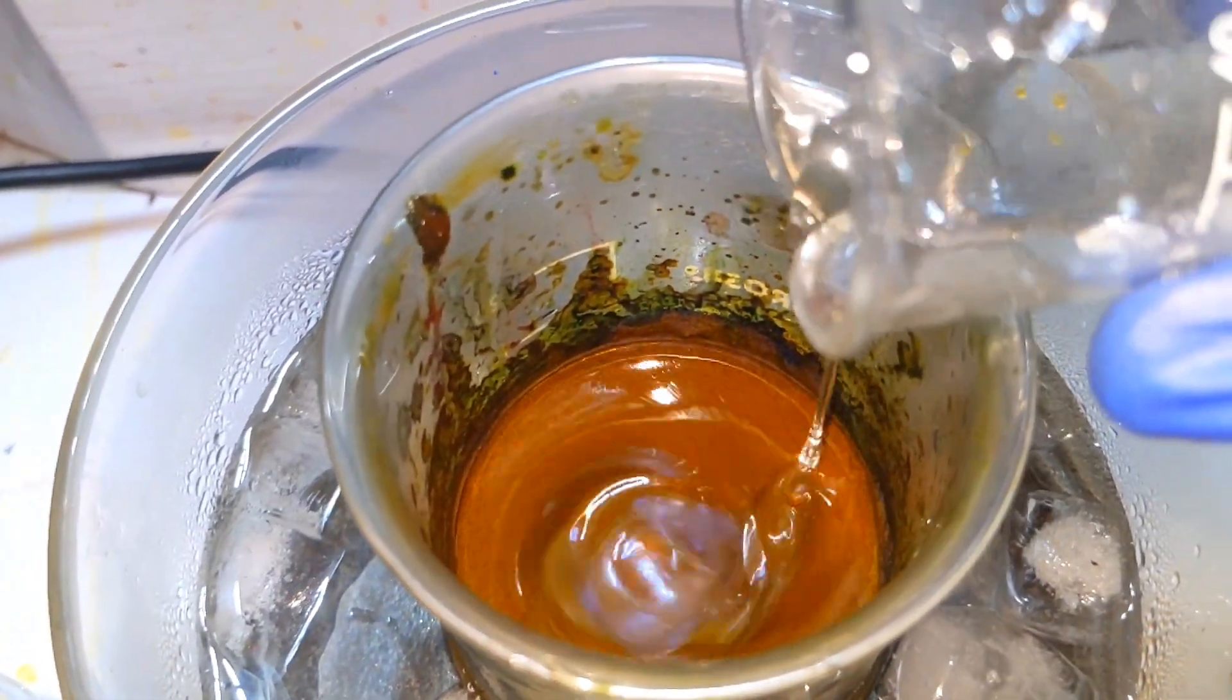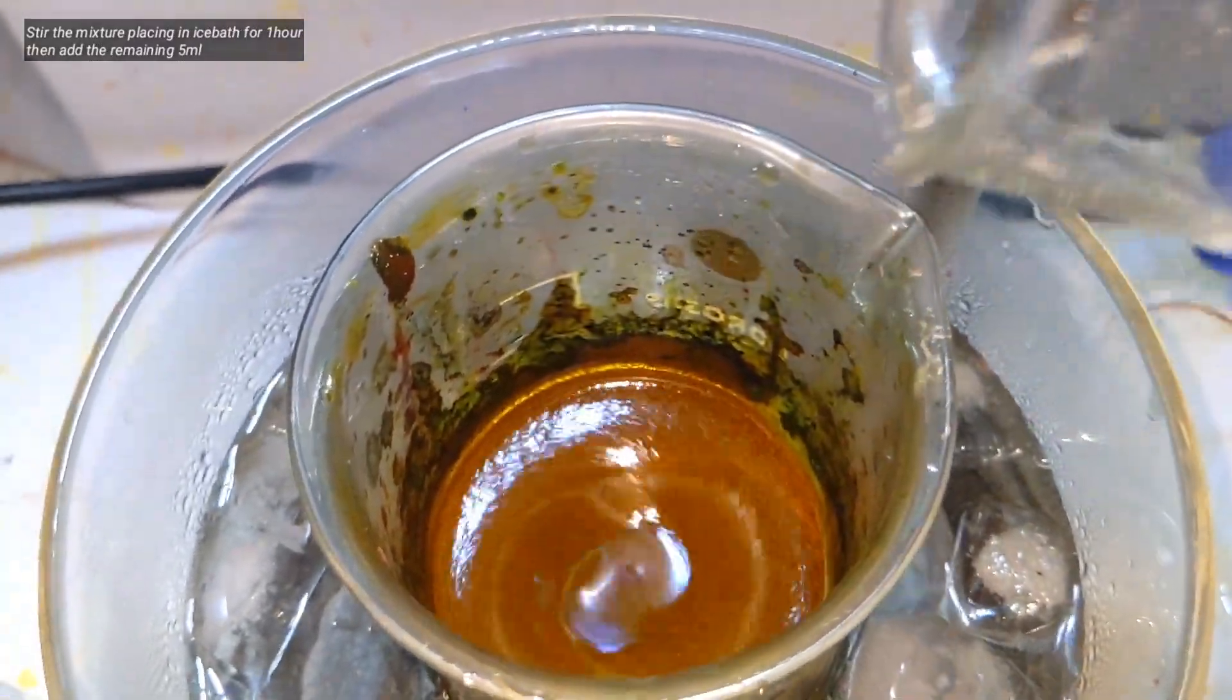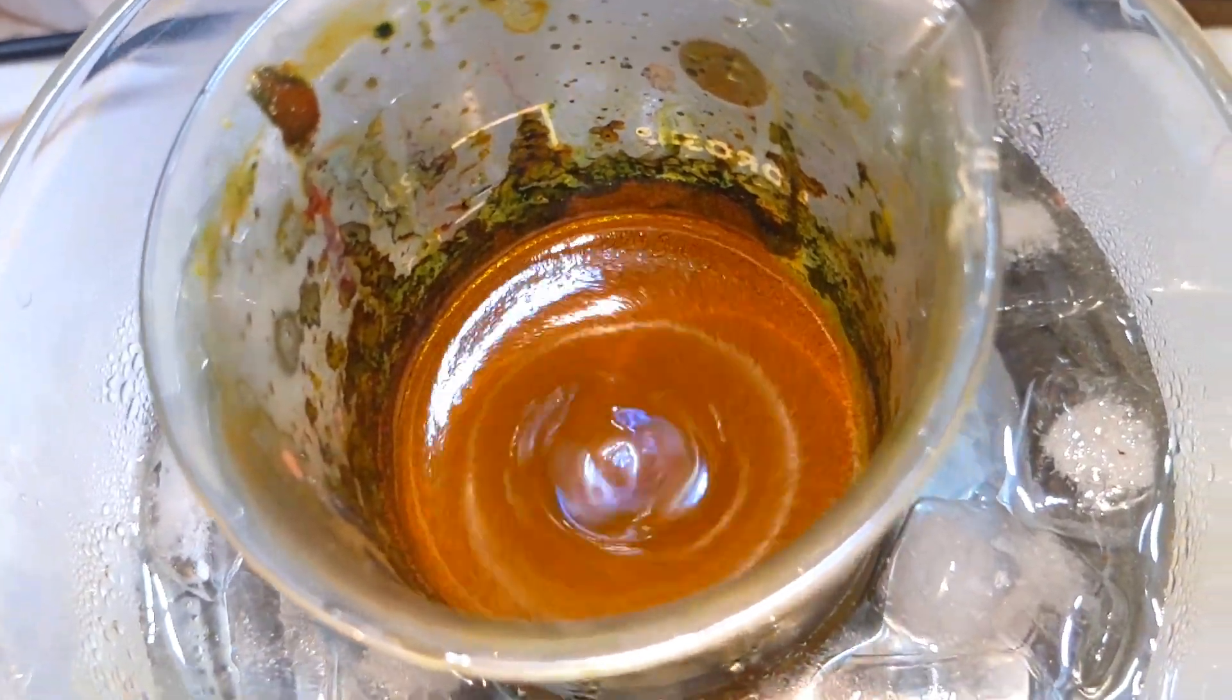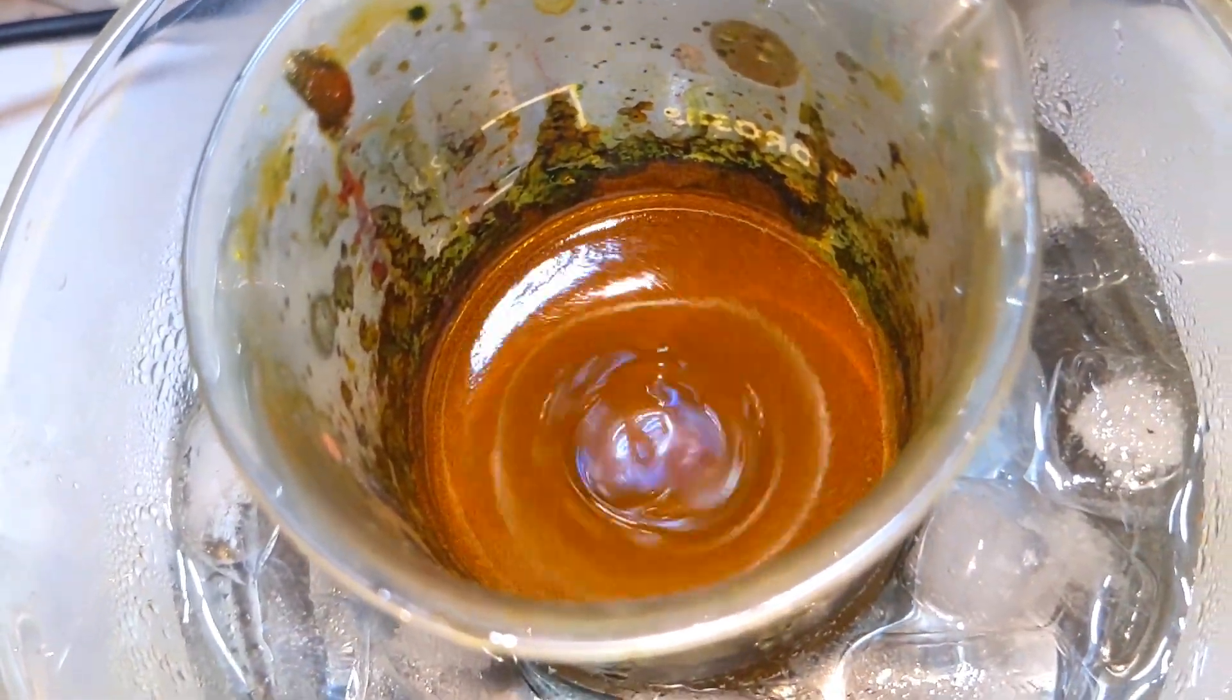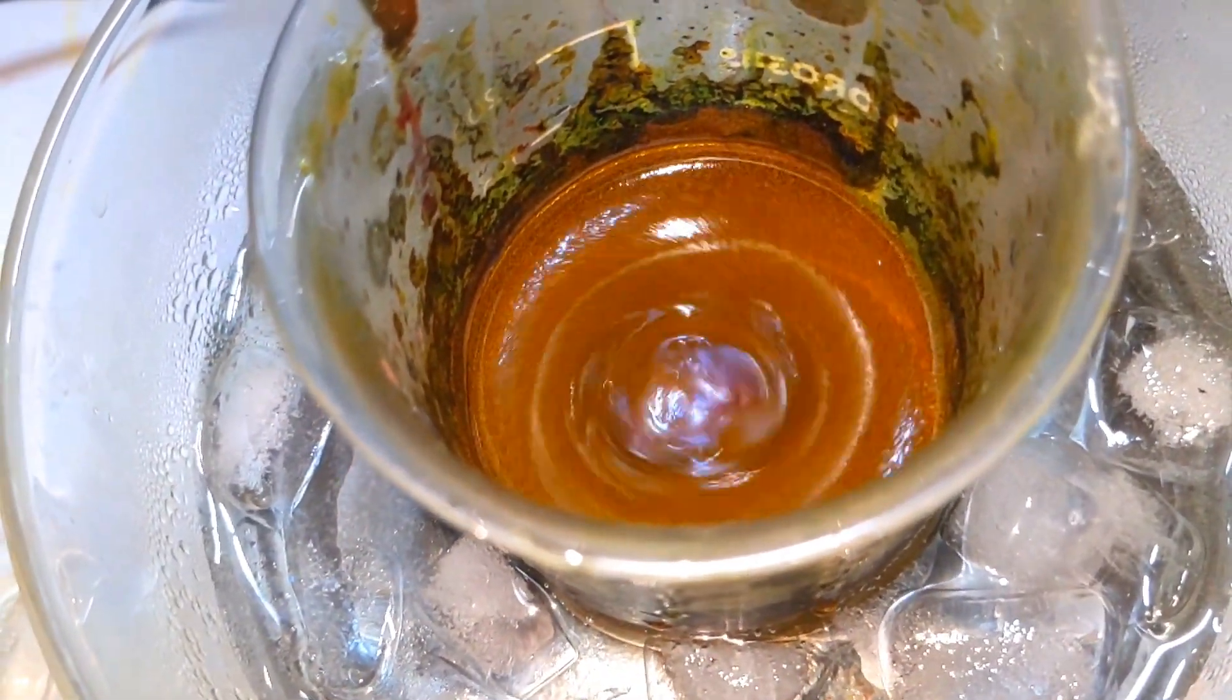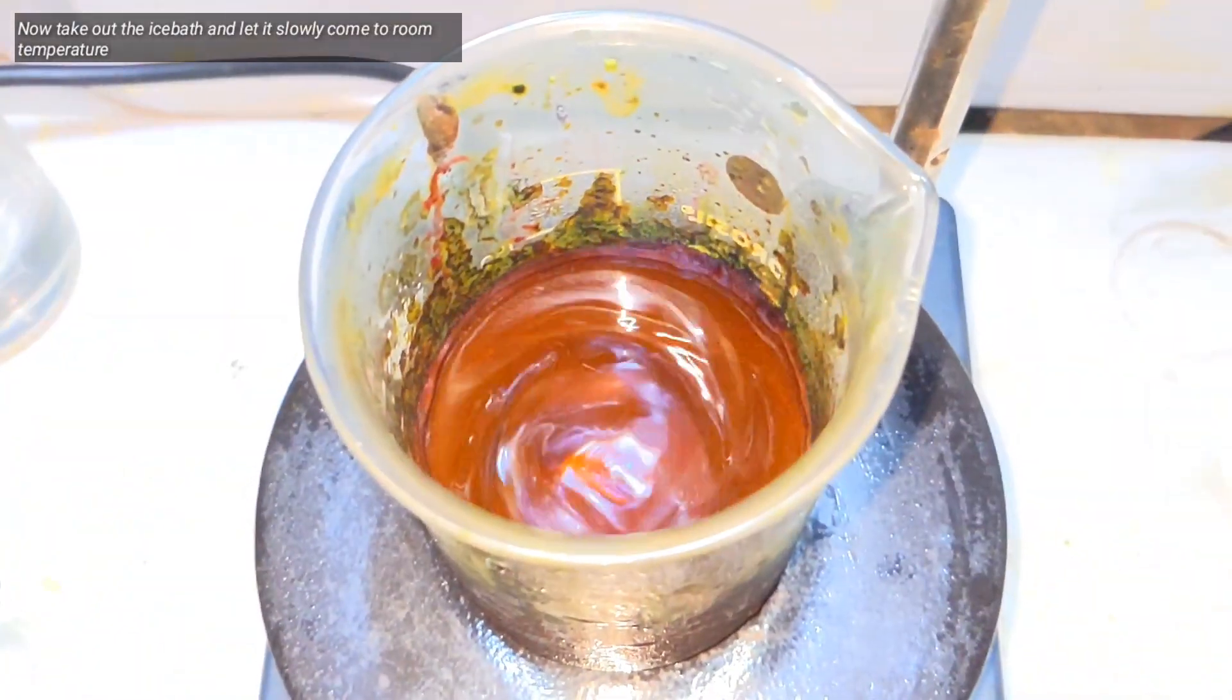After one hour the rest of the sodium acetate solution was poured inside, and then we will let it sit for another half an hour in the ice bath. You can also notice how the consistency of the solution has increased. After half an hour we remove the ice bath and let the beaker come slowly to the room temperature with stirring.